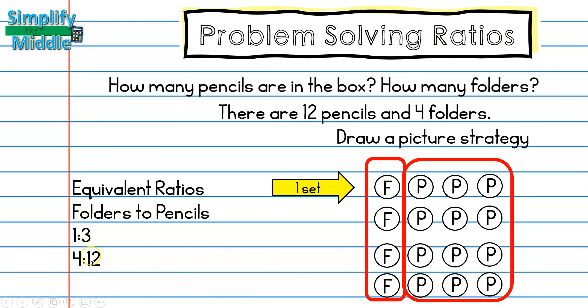I can simplify the fraction four-twelfths and end up with one-third, so I know that these are equivalent. When I add across my original set I have four, and when I add across my total set I have 16.